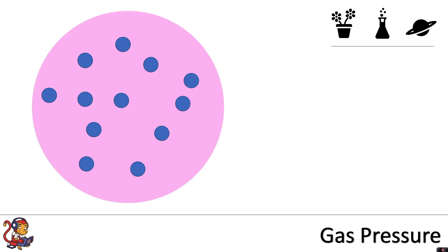Here for example, if I represent the balloon as the large pink circle and the gas particles inside as the blue circles, because it's a gas, the particles are far apart and they will be moving randomly in all directions.